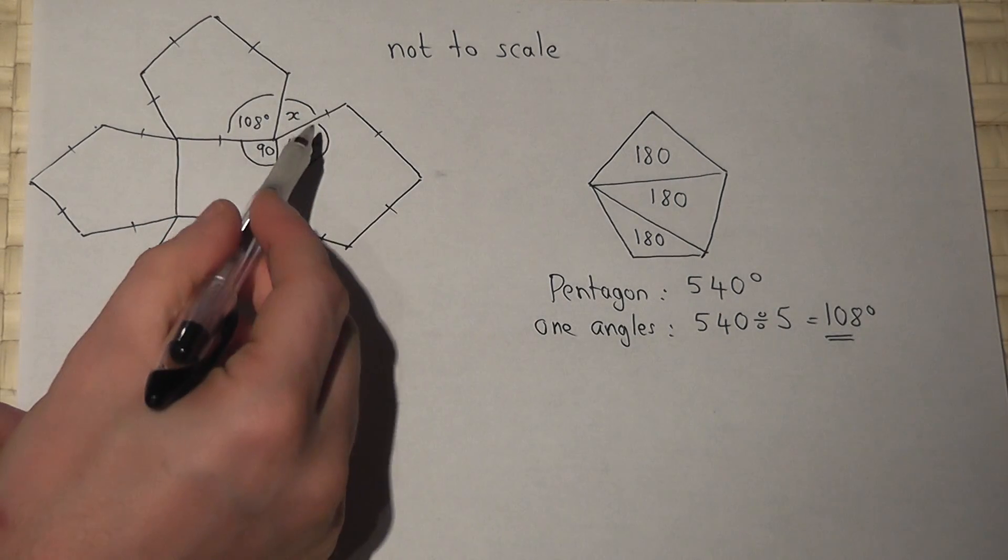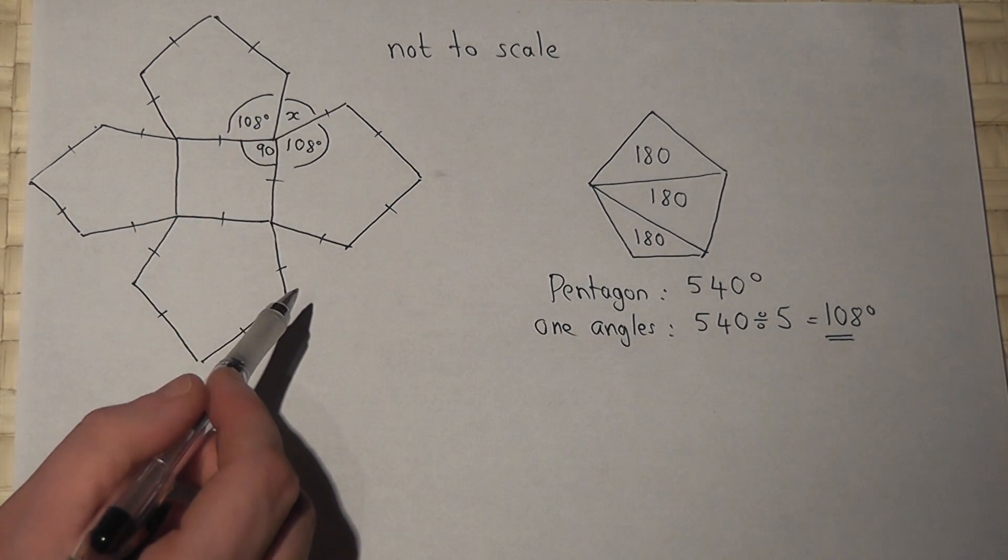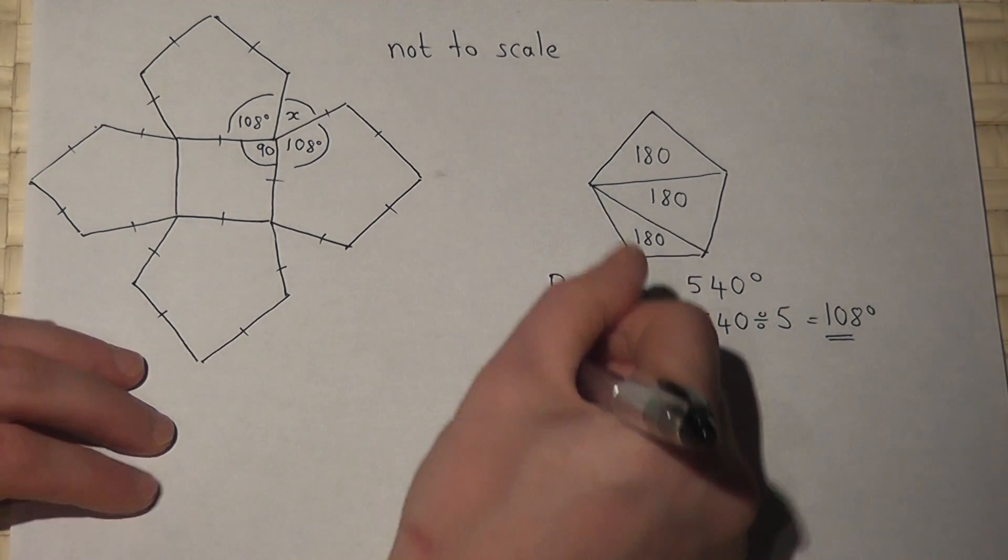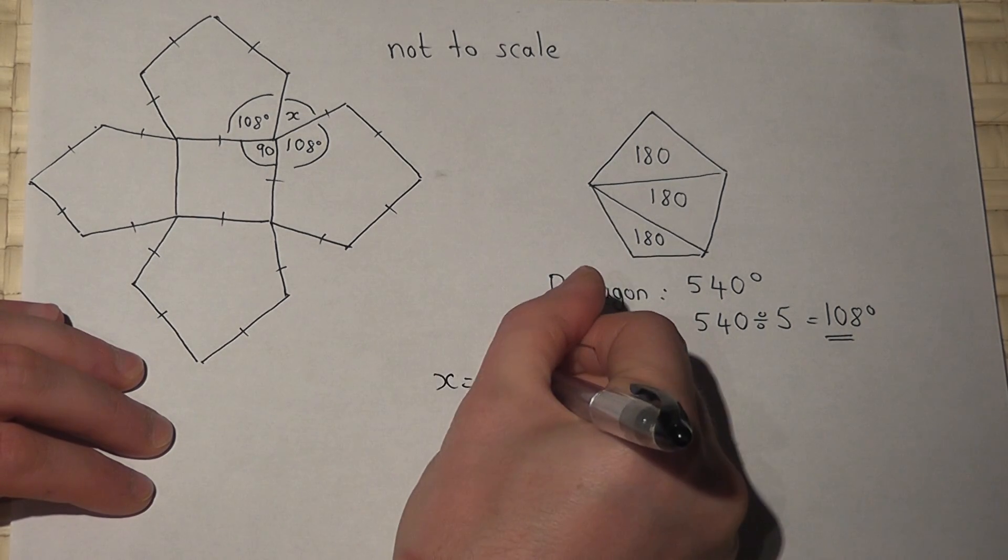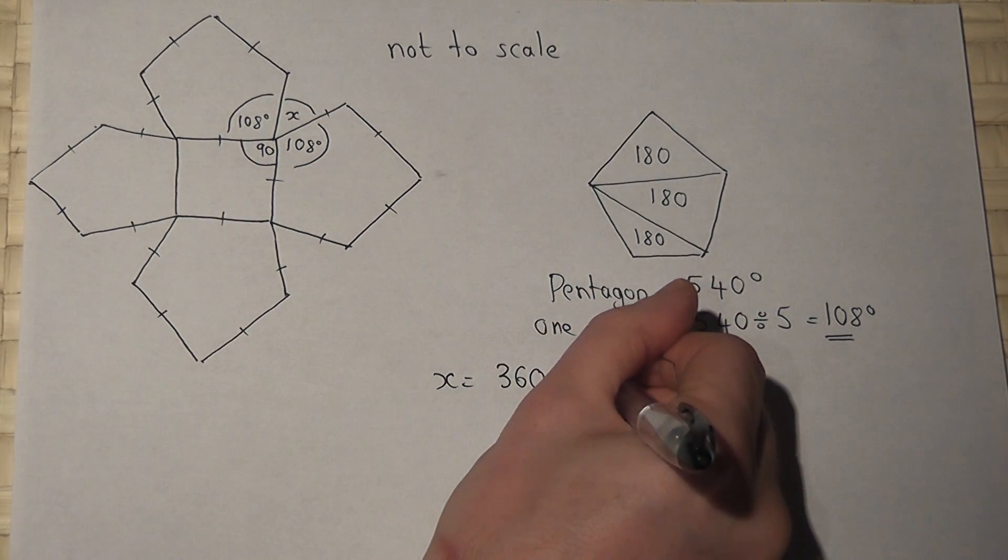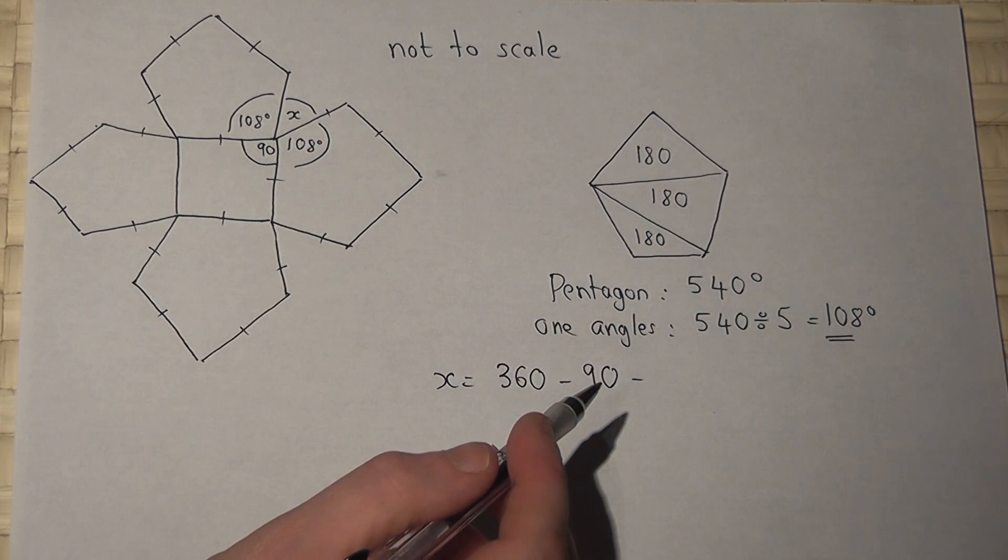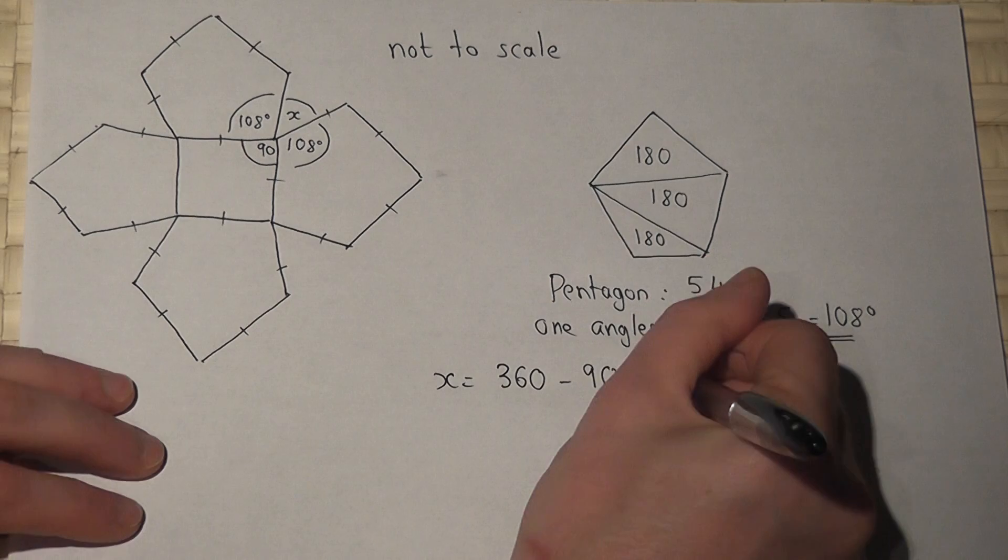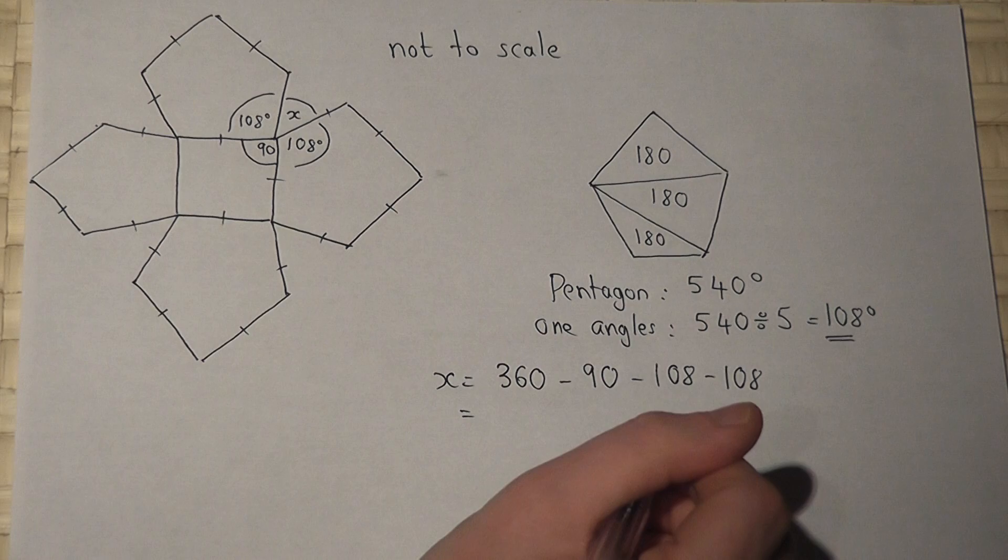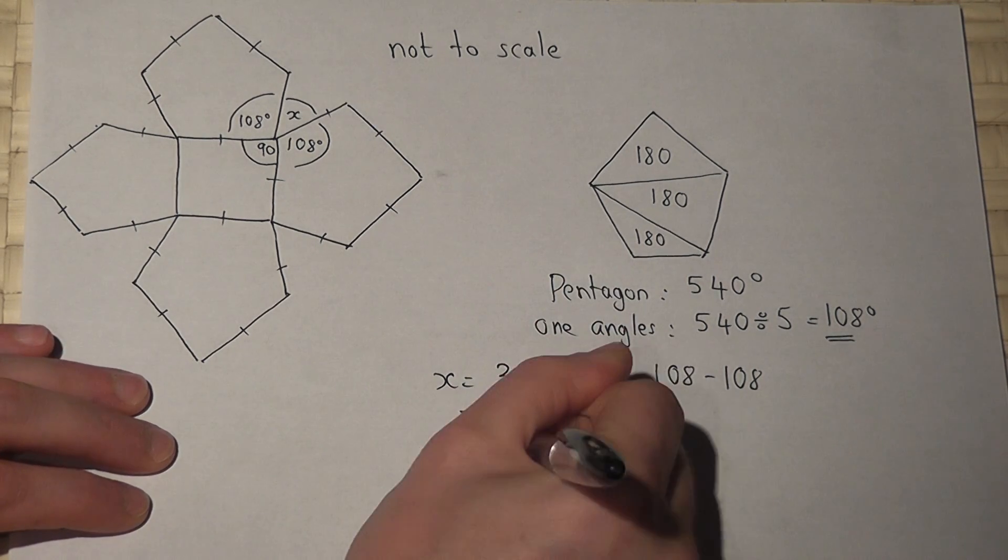So now because these angles also form a circle, they must add to 360 degrees. So to find X I would do 360, I would take away 90, I would take away 2 lots of 108. I would then work that out and we end up with X is equal to 54 degrees.